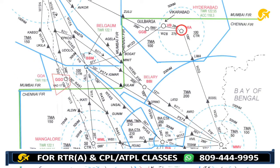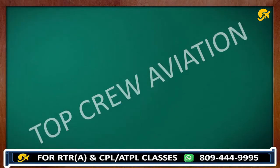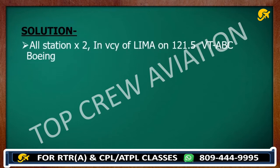This question belongs to chart number 7. We are going from Hyderabad to Chennai, and there is weather outbound Lima. So we follow the format discussed. The call would be: 'All station, all station in vicinity of Lima on 121.5.' Whenever we give information to traffic, we always switch to 121.5 — always mention this frequency when making this kind of call.